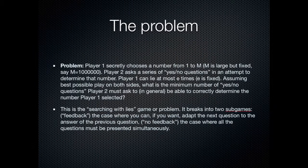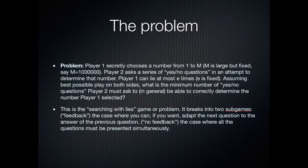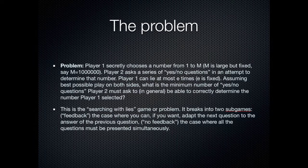At this stage, there's a fairly large literature. Here's the problem: we have two players, Player 1 and Player 2. Player 1 keeps secret a number from 1 to M, where M is some fixed number — let's say a million. Player 2 now asks a series of yes or no questions to try to find that number. Player 1 can lie at most E times, where E is a fixed number both players have agreed on. We want to assume best possible play on both sides, and the question is: what is the minimum number of questions Player 2 can ask to determine the number? This breaks up into two sub-problems.